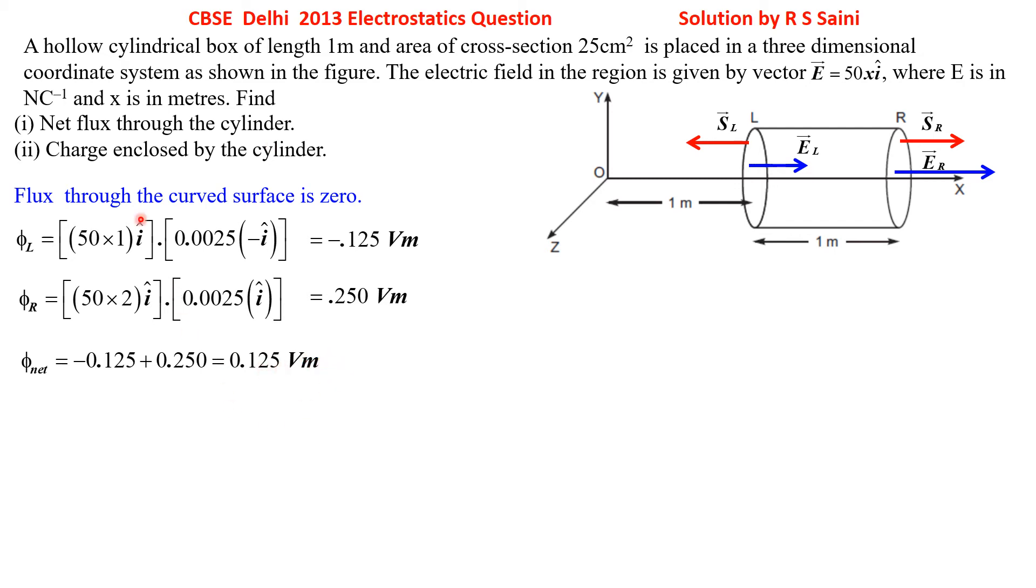Let us come to second part. Second part is what is the charge enclosed by the cylinder. According to Gauss's theorem, I have written in short, according to Gauss's theorem, net flux equals charge enclosed by ε₀. But charge enclosed is 0.125. Multiply this side with ε₀.